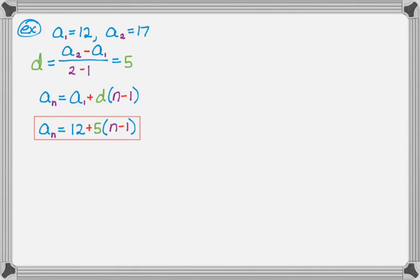So let's take a look at another example. So we have a sub 1 is 15, and a sub 12 is 49. So instead of knowing consecutive terms this time, we know the first term and the 12th term. But we still just have to calculate d.